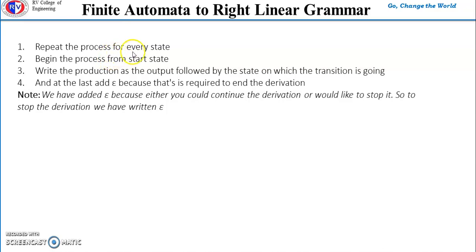First step is repeat the process for every state. Begin the process from start state and write the production as the output followed by the state on which the transition is going. At the end, add epsilon.